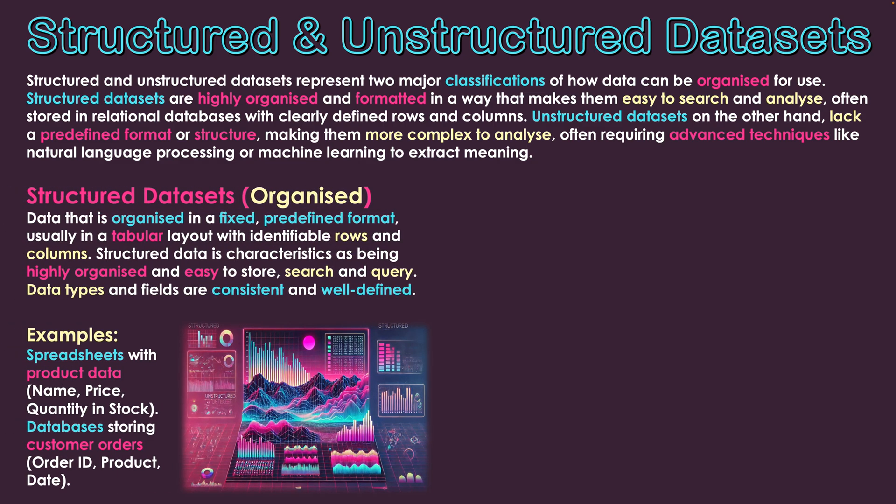The first type is the structured data set — the organized one. Data is organized in a fixed, predefined format, usually in a tabular layout with identifiable rows and columns. Structured data is characterized as being highly organized and easy to store, search, and query. Data types and fields are consistent and well defined. Everything in it is extremely consistent in format and type, making it very easy to sort through — not just from the human standpoint, but from the software itself — and making it very easy to analyze.